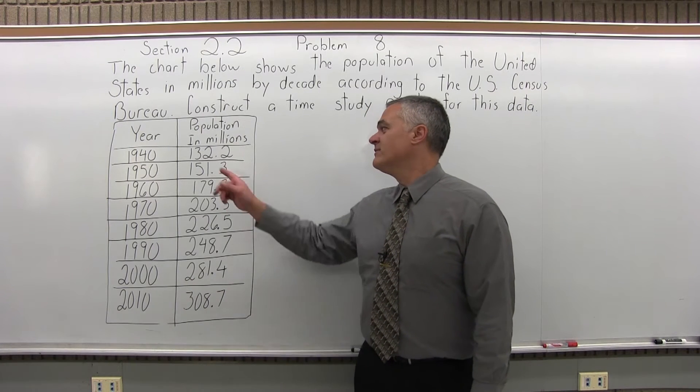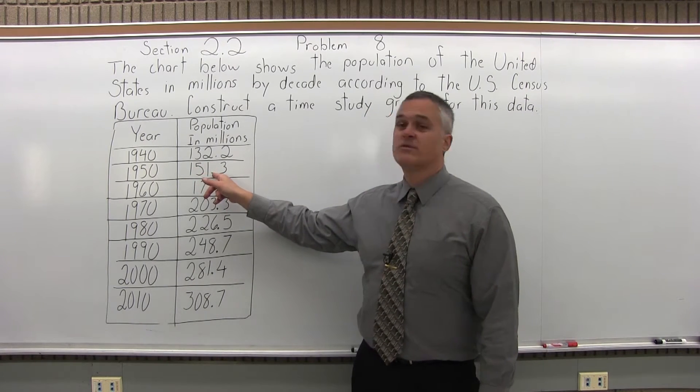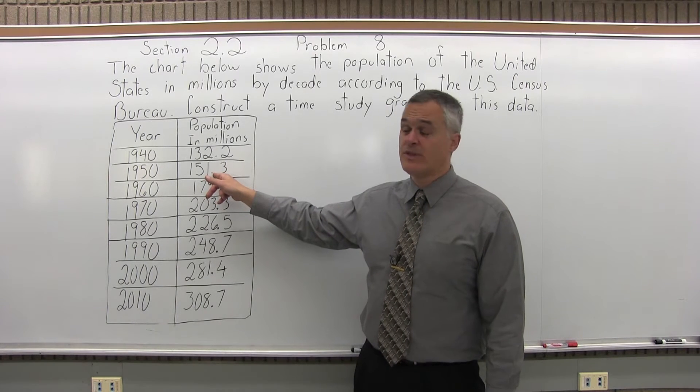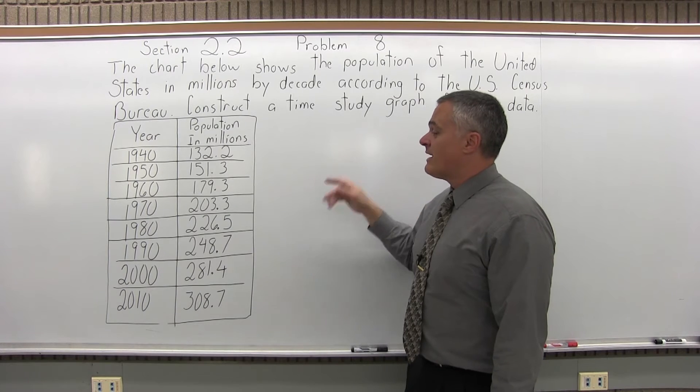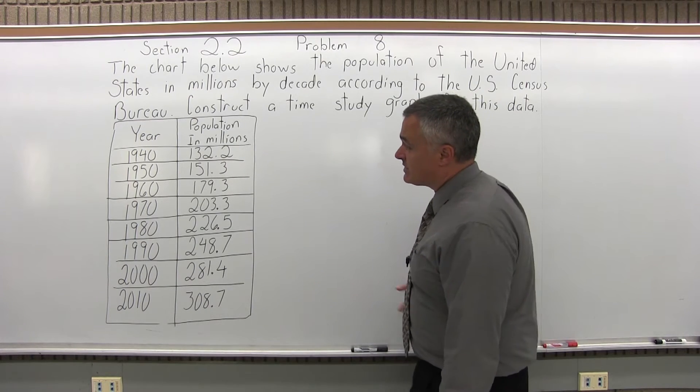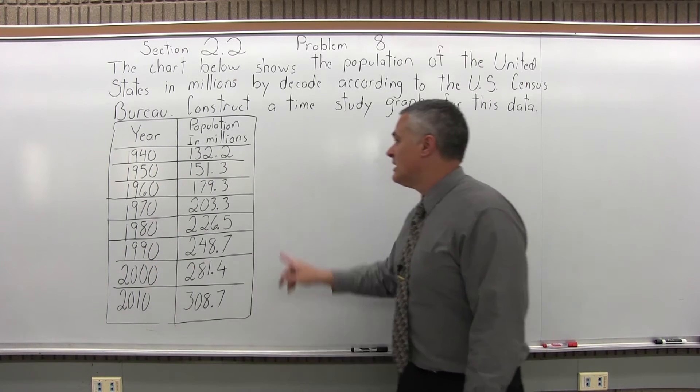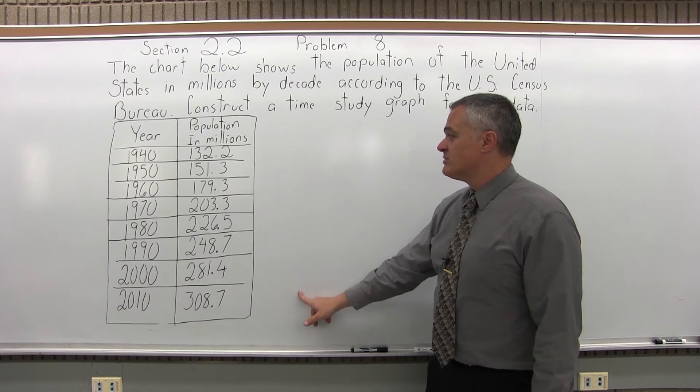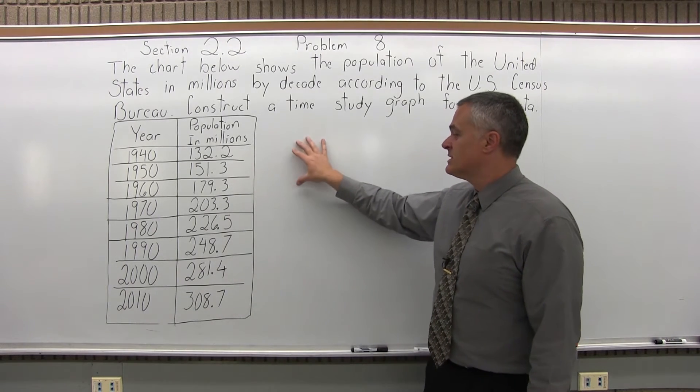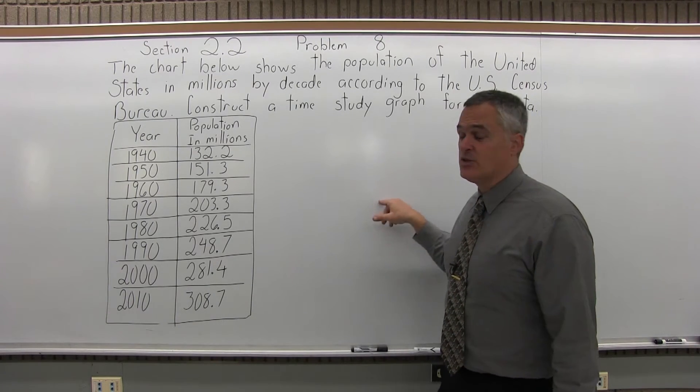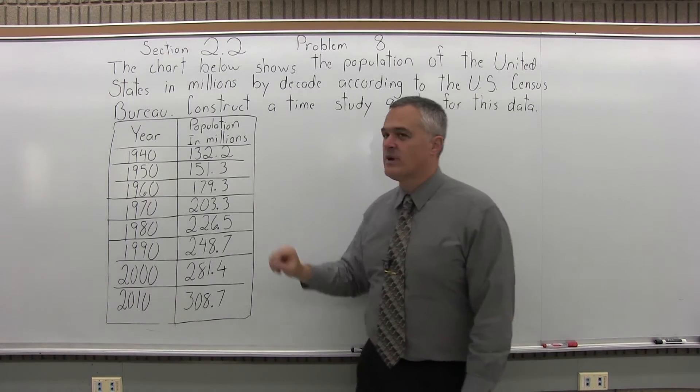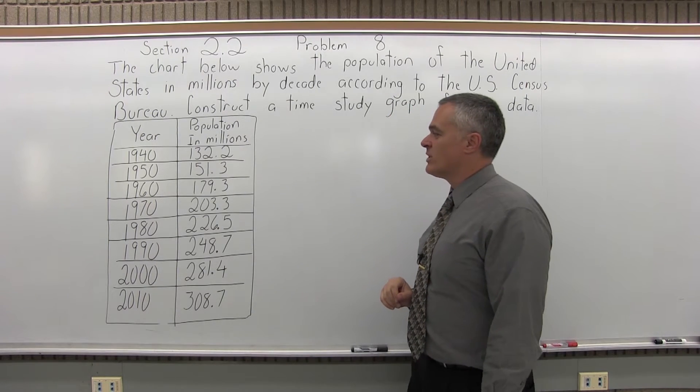So again, 1950 being 151.3 means 151,300,000. So a time study graph has some form of time listed on the bottom, which would be the years, number scale on the left edge, which would accommodate these very big numbers, and you're going to have a dot above each time based on your number scale, and you're going to connect the dots. So these are like stock market looking graphs typically, that's what we're looking for.